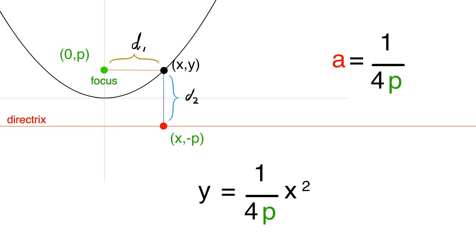Now, let's let a equal to 1 over 4p. Therefore, the general equation of a parabola is y is equal to ax squared.